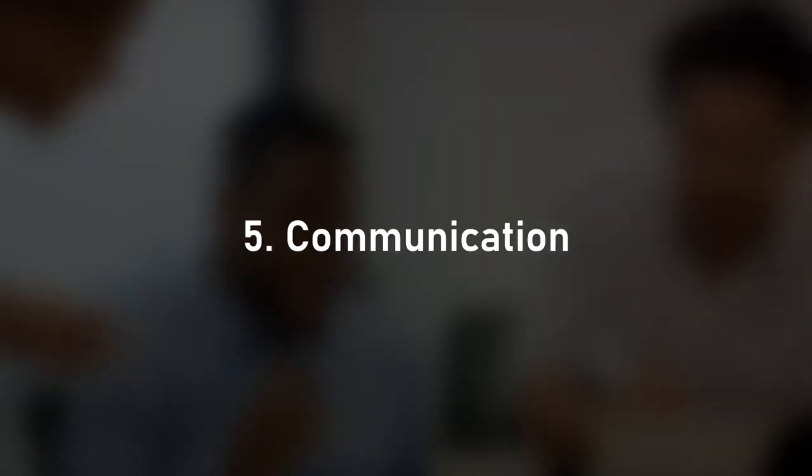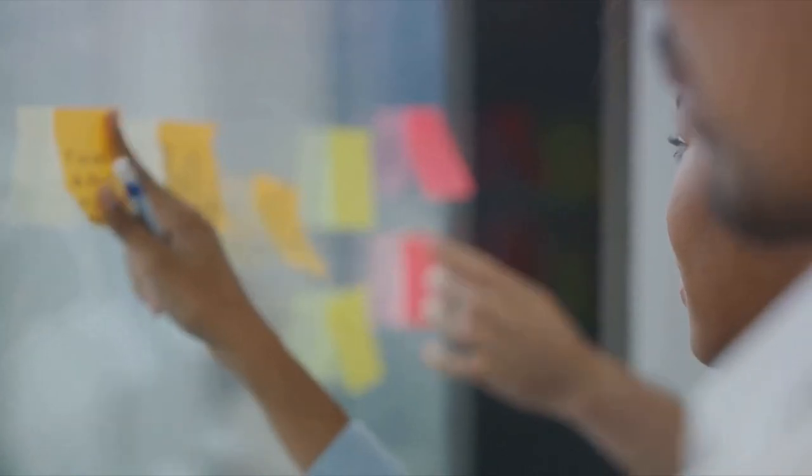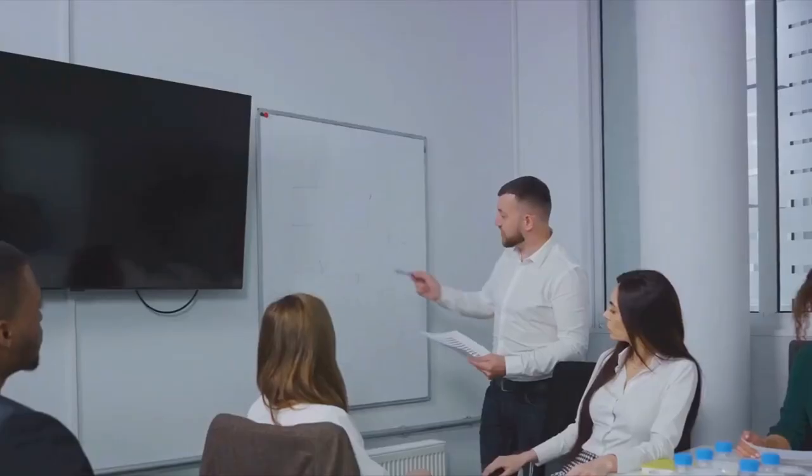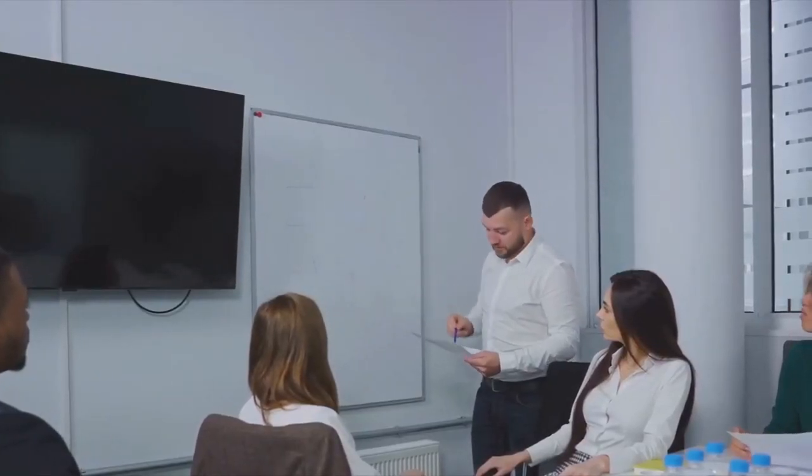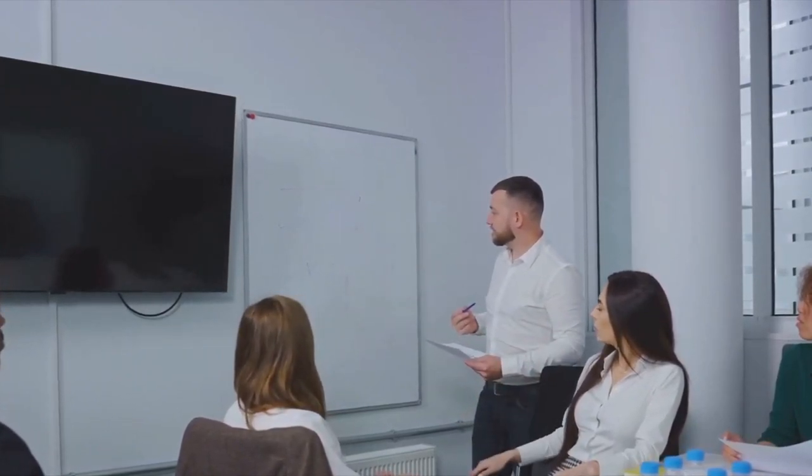Now let's delve into principle number five, communication. Effective leaders communicate their vision clearly and effectively, ensuring that every team member understands the direction and the goals. They listen actively, valuing feedback and ideas from their team. This two-way communication is crucial for a leader's effectiveness. It's all about creating an open dialogue, a space where everyone feels heard and valued. This not only boosts morale, but also encourages innovation and creativity within the team.